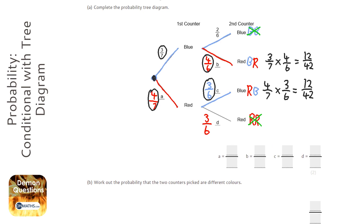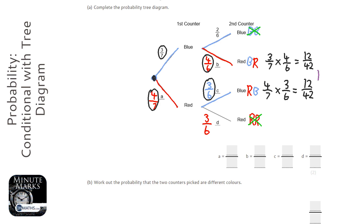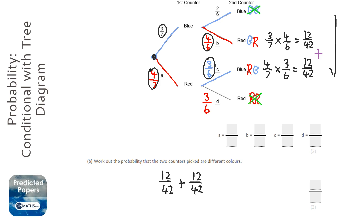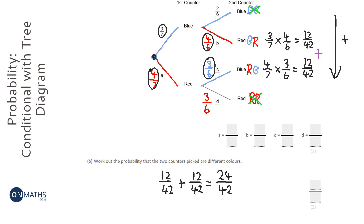We had 12 over 42 for the first option and 12 over 42 for the second, but we can't pick both options — we can't have two answers. The word 'or' comes into effect: we either pick blue then red, or red then blue. In probability, 'or' means add. So all we need to do is add the two options together, adding the tops to get 24 over 42.